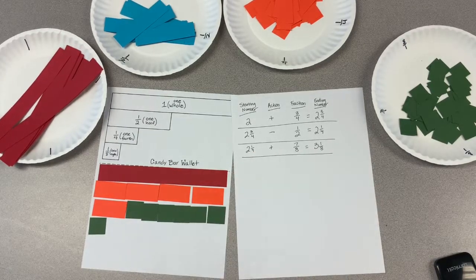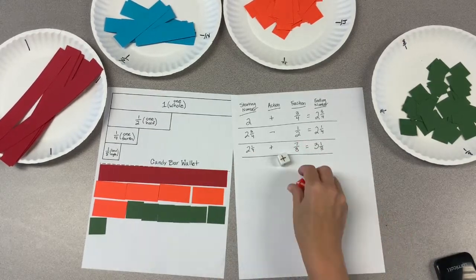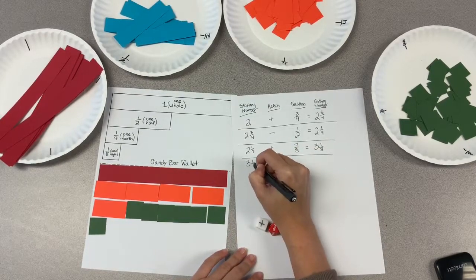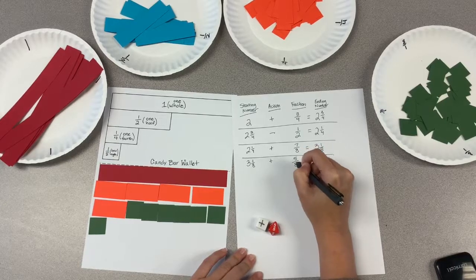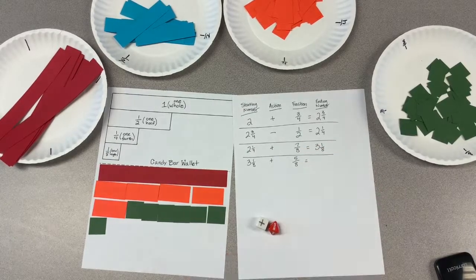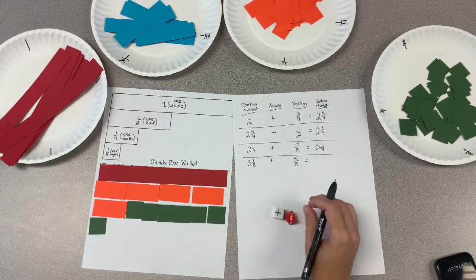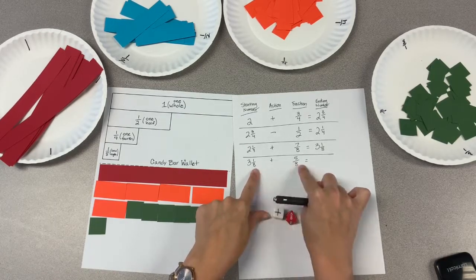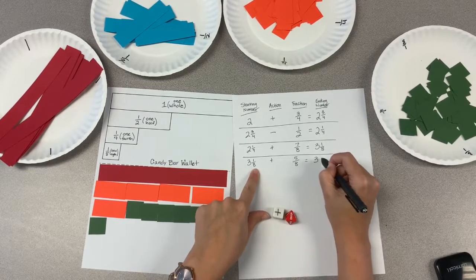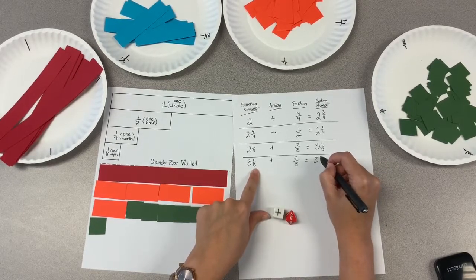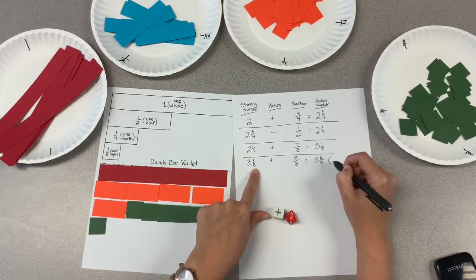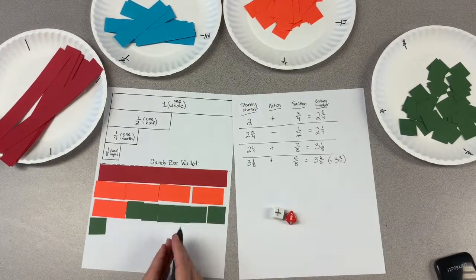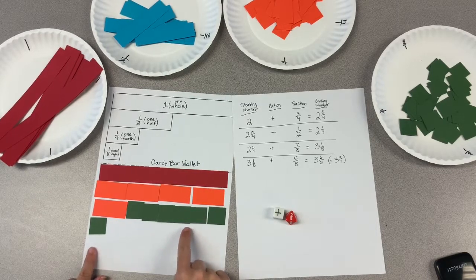Let's just do one more. Three and one eighths plus five eighths equals. This one should be simple. I want students to see mathematically that we're working with eighths. They should already know the answer is three and six eighths. They might also know that that's equivalent to three and three fourths.